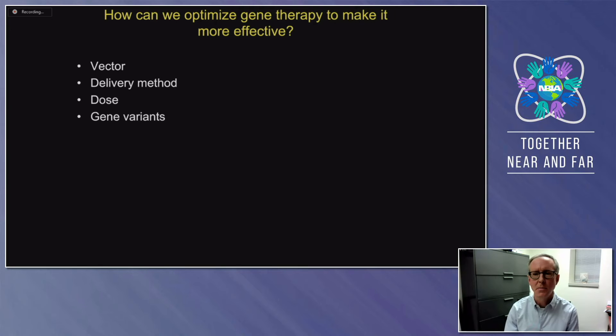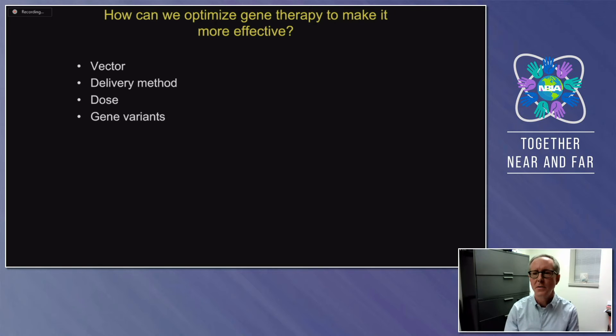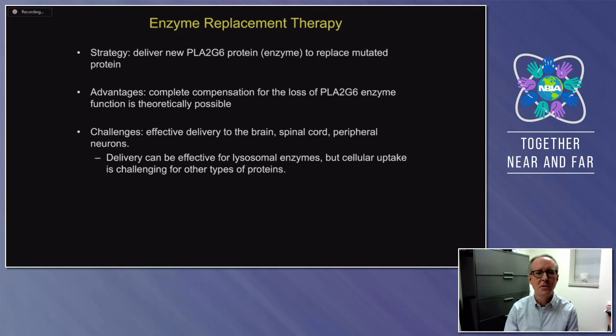We've learned a lot from these experiments and we have ideas. We used newer vectors known to effectively deliver genes to the brain in mice, and we did get delivery, but it doesn't seem to be good enough. We didn't get the gene to enough cells or the right neuronal populations. So we're thinking about improvements in the vector, the delivery method, the dose, and even different gene variants as we continue to pursue this strategy.